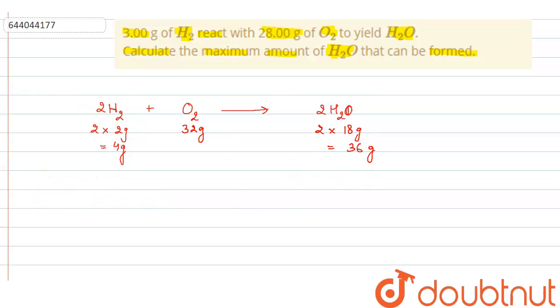So from here we can say that 4 gram H2 react with 32 gram O2 and forms 36 gram H2O, that is water. Right. So from here we can say 4 gram H2 reacts with 32 gram O2, but in the equation we are given only 3 gram of H2.